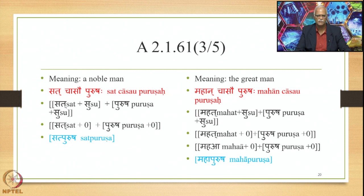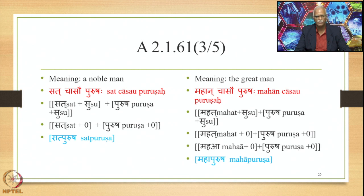For the meaning 'a noble man,' the Laukika Vigraha is Sat cha sav Purushaha, where Sat and Purusha refer to one and the same entity — they are co-referential with semantic relatedness, so compounding takes place. The Alaukika Vigraha is Sat plus Su plus Purusha plus Su. After Pratipadika is formed, Supodhatup Pratipadika Yoho applies and both Supas are deleted, giving Sat plus 0 plus Purusha plus 0, and so Satpurusha as the finally derived compound output.